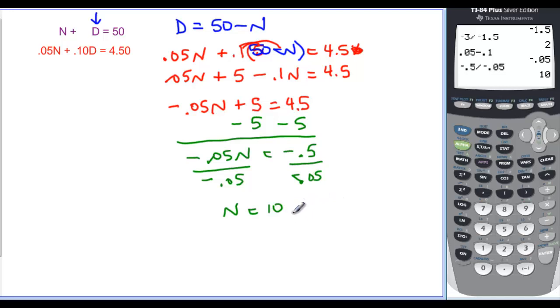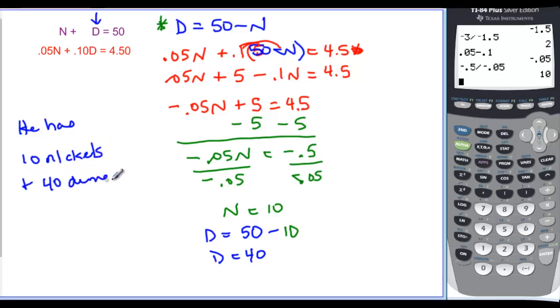And now I know how many nickels, I have to plug that into my top equation up here. So d is equal to 50 minus that 10. So that tells us that we have d equal to 40. So he has 10 nickels and 40 dimes.